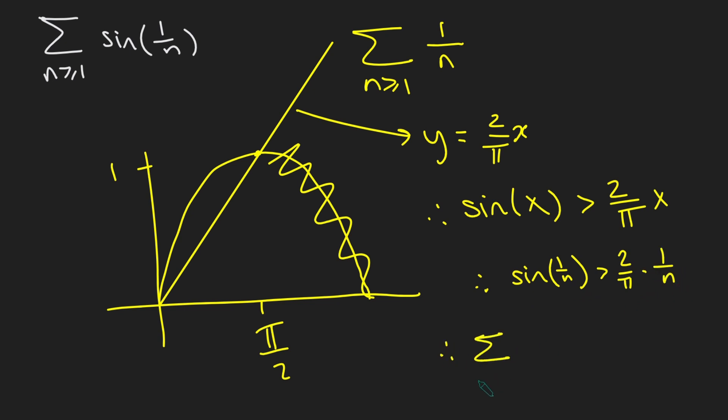And so therefore, the sum from n equals 1 to infinity of sine of 1 over n is going to be bigger than 2 over pi times the sum of 1 over n from n equals 1 to infinity. So just by using a comparison, this guy here diverges to infinity. And so therefore, this guy here also diverges as well.